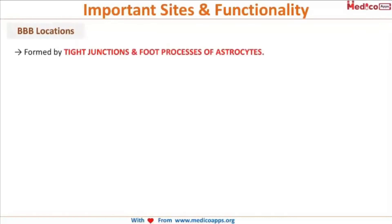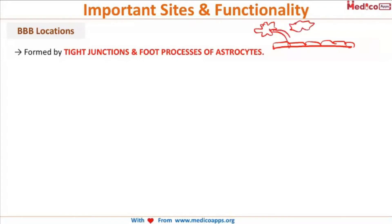The blood-brain barrier is mainly formed by tight junctions and foot processes of astrocytes. Let's draw a rough image of how this might look — these are the tight junctions that are present, and the astrocyte, a star-shaped cell, sends out processes that go and reinforce the tight junctions. This is how the blood-brain barrier is majorly formed.